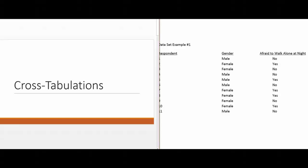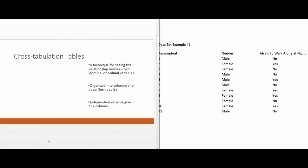This video presentation covers cross-tabulation tables. A cross-tabulation table is a way to see the relationship between two nominal or ordinal variables. Cross-tabs are typically reserved for nominal and ordinal variables.